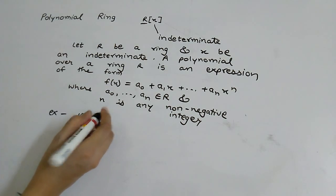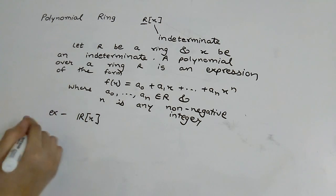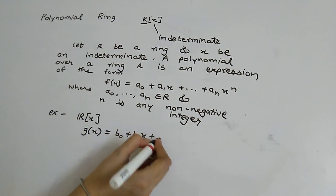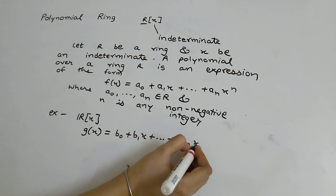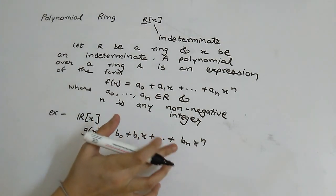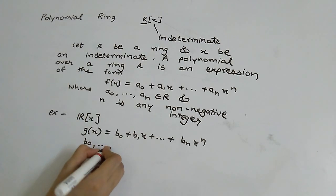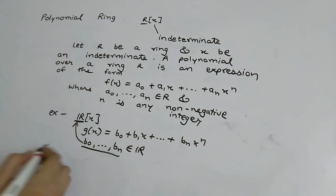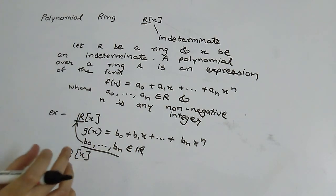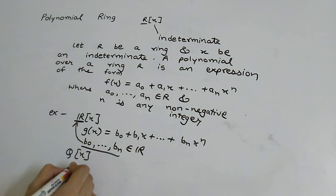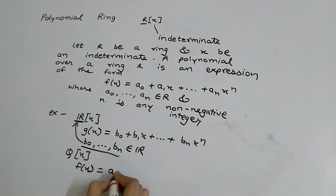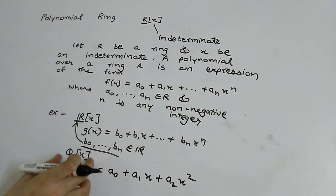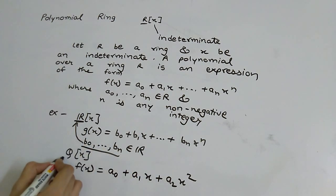R[x] is a polynomial ring, and in this form we will have g(x) = b0 + b1x + ... + bnx^n. For example, if we write Q[x], then for a polynomial f(x) = a0 + a1x + a2x^2 belonging to Q[x], the coefficients a0, a1, and a2 will all belong to the rational number set.